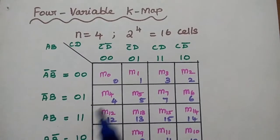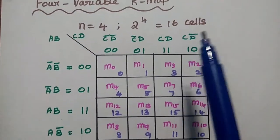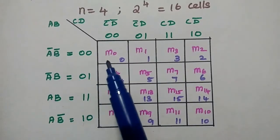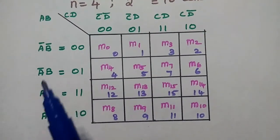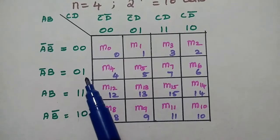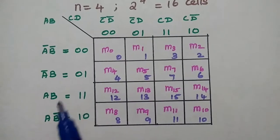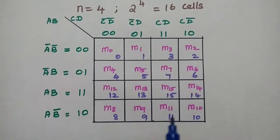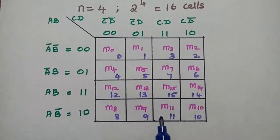Similarly, we can draw the K-map for 4 variables. N equals 4 means 2 to the power 4 equals 16 cells. Here, A and B represent the row variables, and C and D represent the column variables. The rows follow Gray code sequence: A-bar B-bar, A-bar B, AB, AB-bar — only one bit changes between adjacent rows and columns. This representation is very important; based on it we can solve Boolean expression problems.